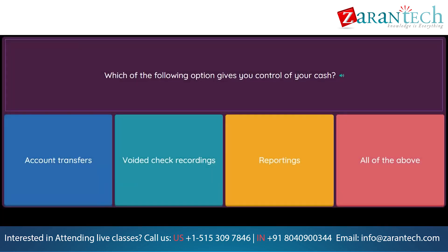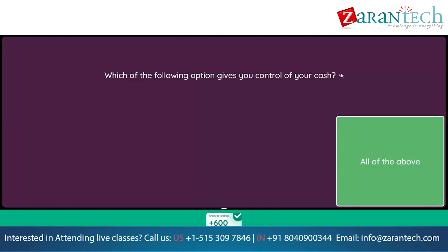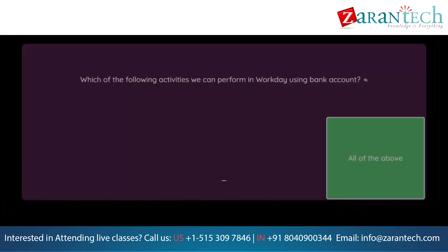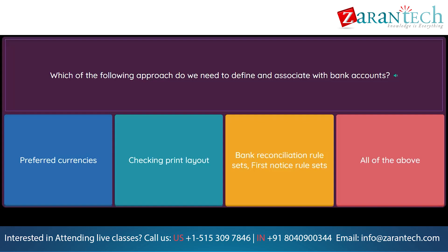Question: Which of the following options gives you control of your cash? Option 1: account transfers. Option 2: voided check recordings. Option 3: reportings. Option 4: all of the above. Question: Which of the following activities can we perform in Workday using bank accounts? Option 1: create, make, and receive payments. Option 2: reconcile bank statements. Option 3: manage cash. Option 4: all of the above. Question: Which of the following approaches do we need to define and associate with bank accounts? Option 1: preferred currencies. Option 2: checking print layout. Option 3: bank reconciliation rule sets. Option 4: all of the above.